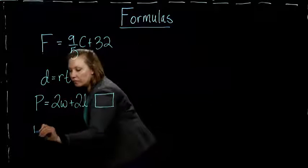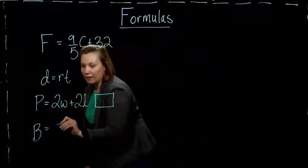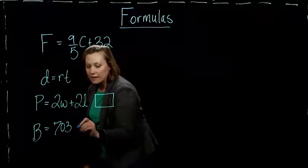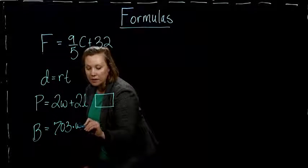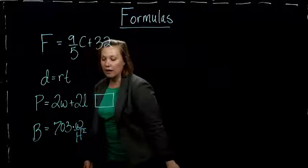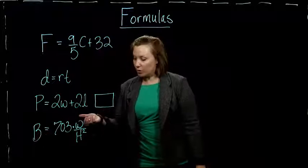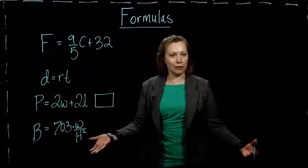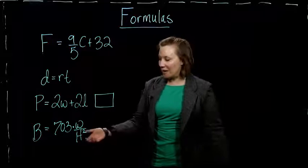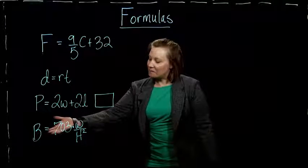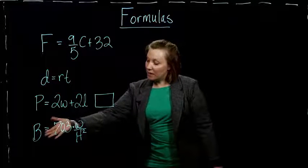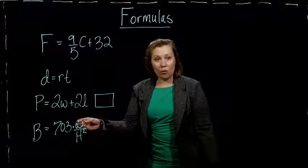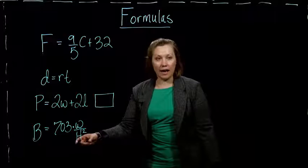Another one, you can actually go online and find calculators that will calculate this for you, is B equals 703 times W over H squared. And this one gives us our body mass index, which relates weight to height. Some doctors will use it to see how healthy your weight is related to your height. So, your body mass index, you can calculate it by taking 703 and multiplying it times your weight in pounds divided by height in inches.